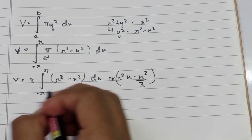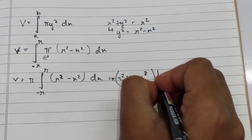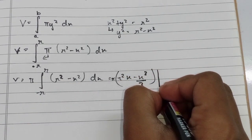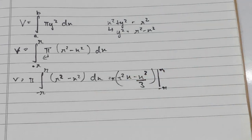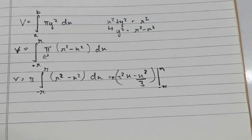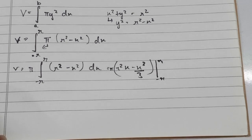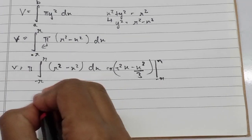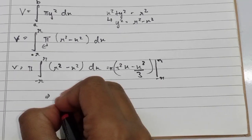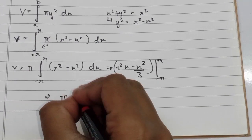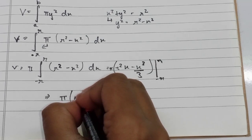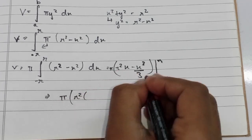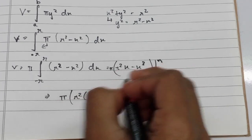This is evaluated from −r to r. Now let's plug in the values. We get π times: r² times r minus r³/3...